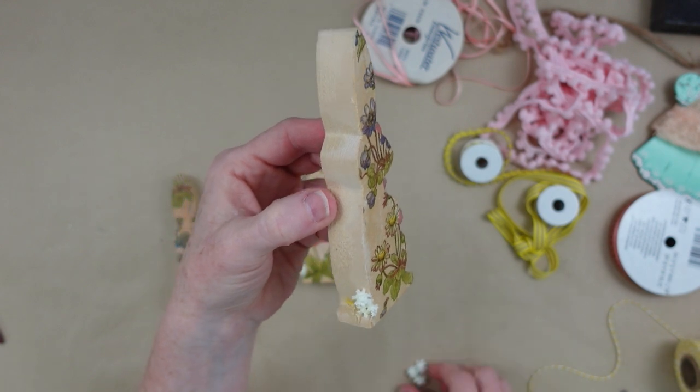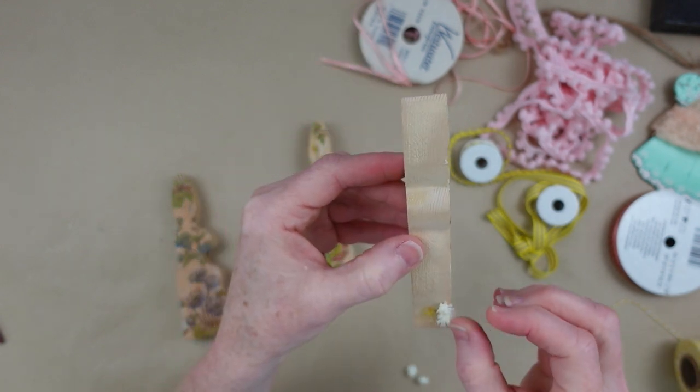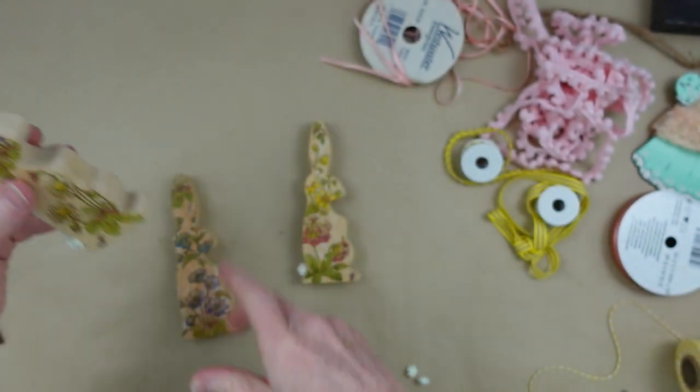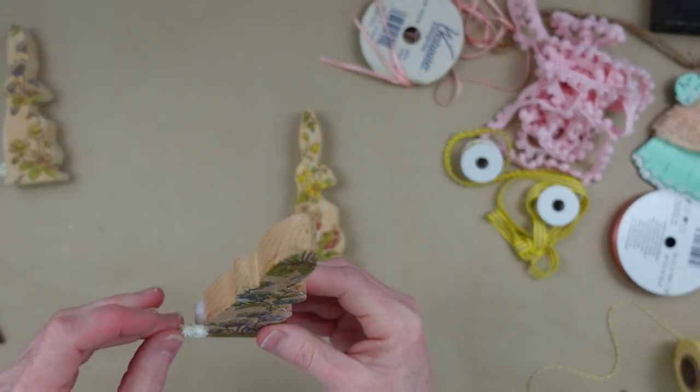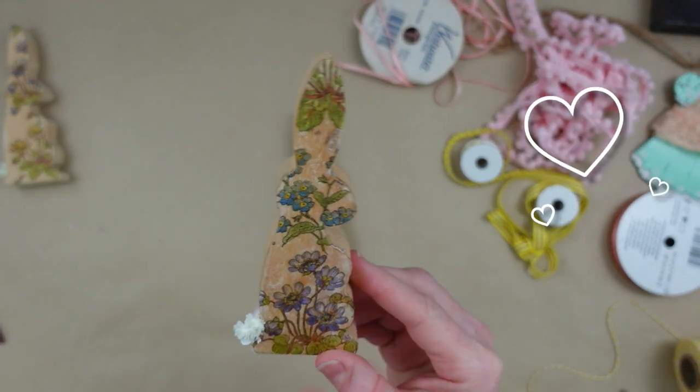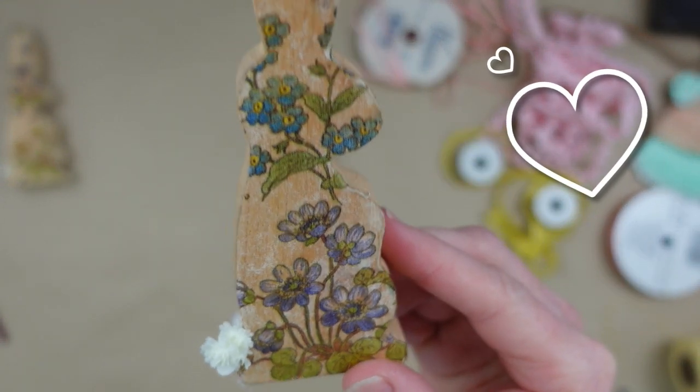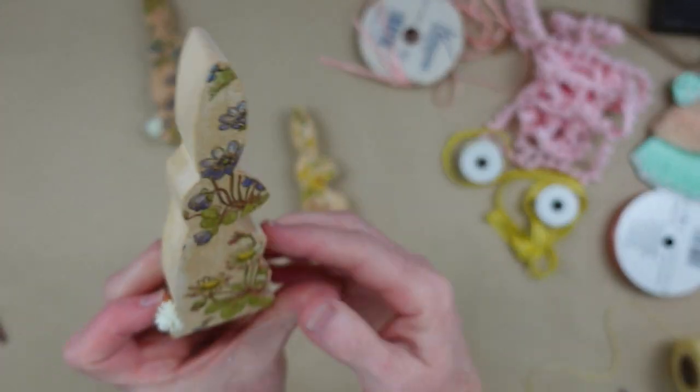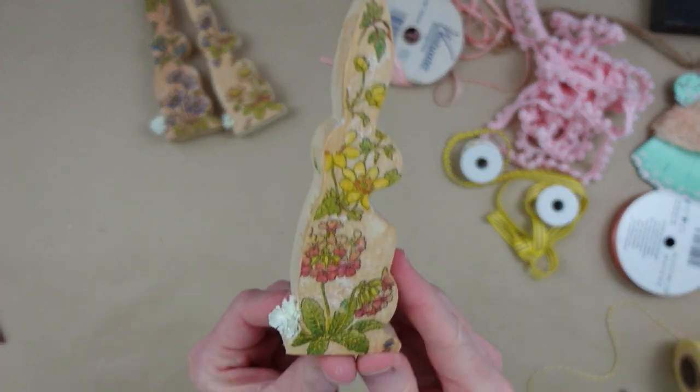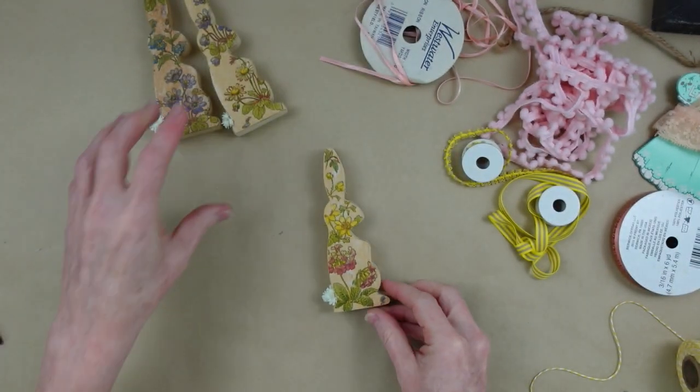For the tail, I started off using some little pom-poms, but then I decided I've got some baby's breath left over. How cute would that be to make a tail with the flowers for the cottage bunnies? Look how cute they turned out. I just used three, and I kind of stacked them on top of one another. It makes the cutest little floral tail. I think it's perfect. You can certainly use pom-poms or whatever you like for yours.